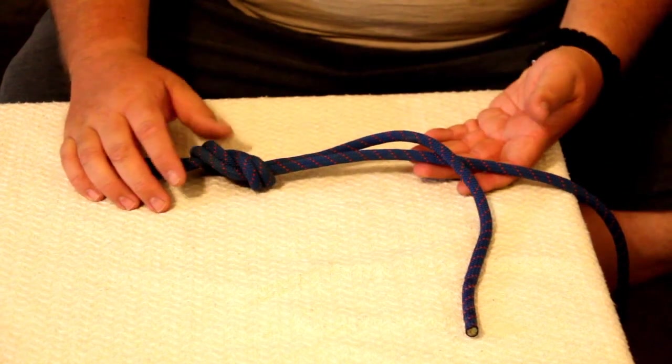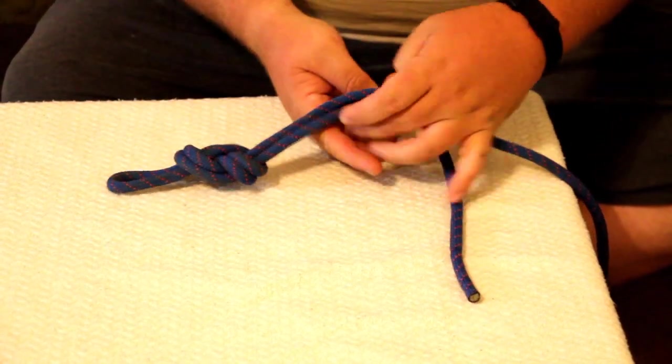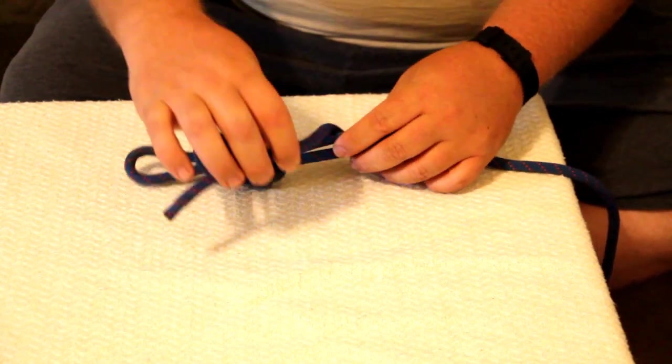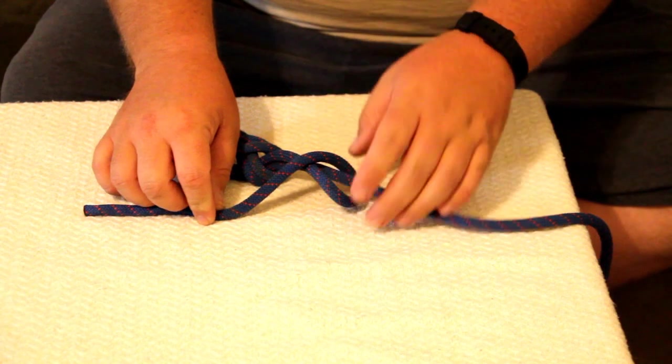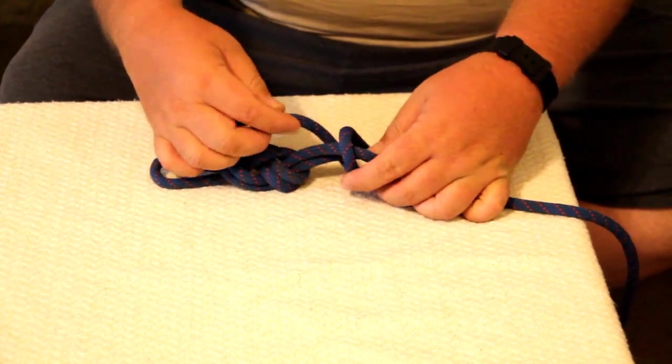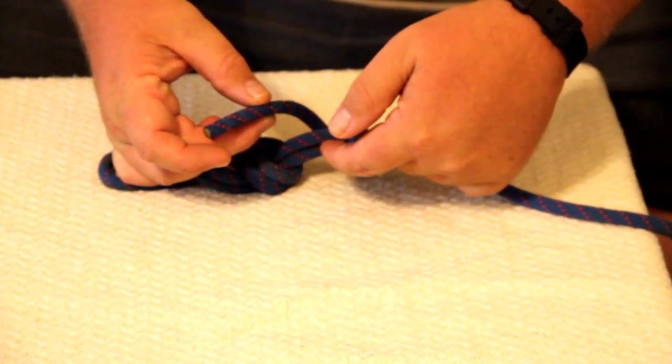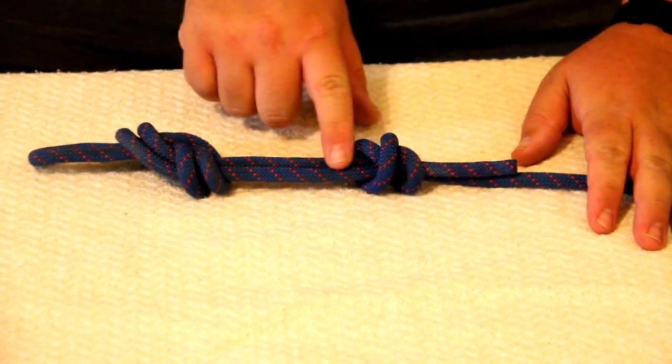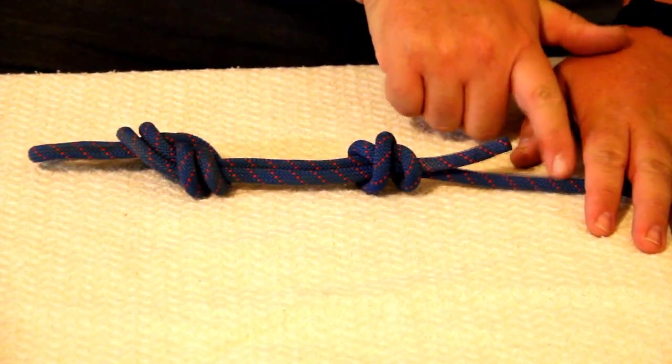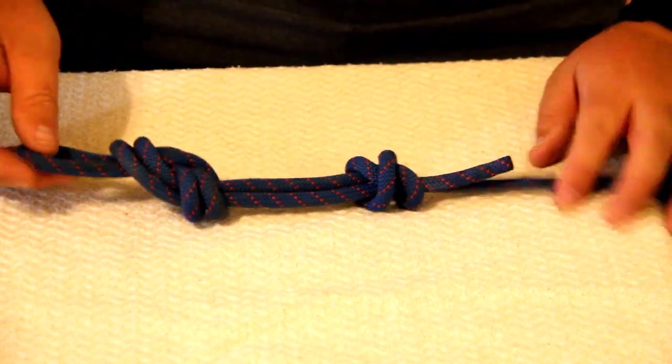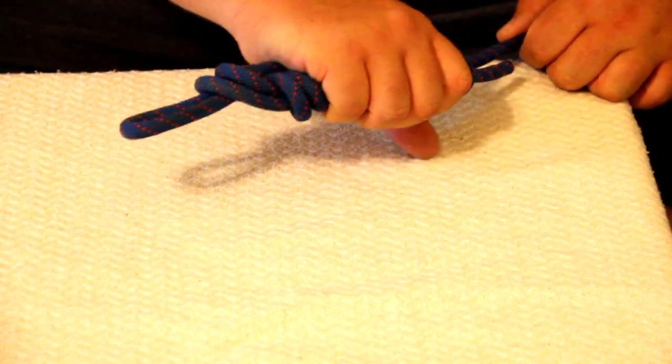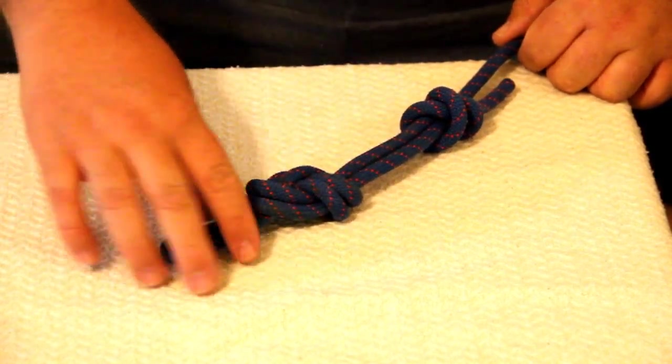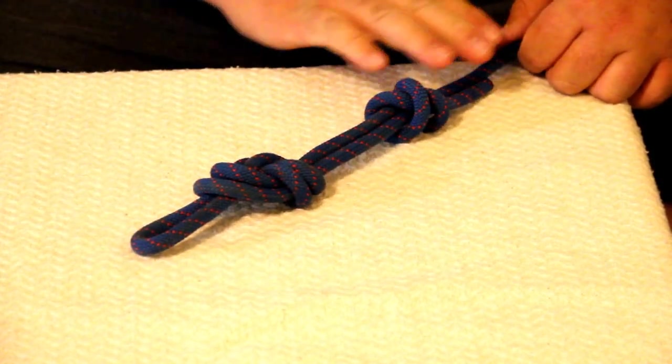Then our next one is going to be our safety knot. Now our safety knot is half a double fisherman's knot. Basically what we're going to do is we've got the rope laid out flat like this, we're going to go around once, that makes us a little loop here. We're going to go around a second time, so we're coming back up again for our second loop here. We're going to cross over our main line and come down through and pull tight.